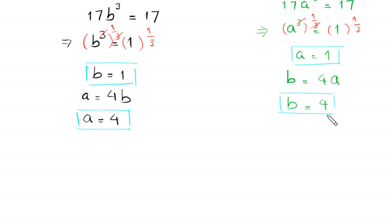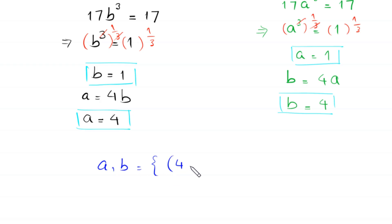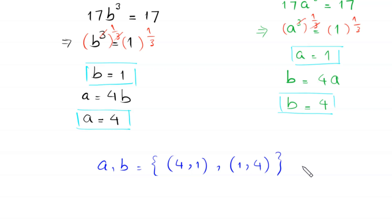The final set of solutions is (a, b) = (4, 1) and (a, b) = (1, 4). This is the final answer.